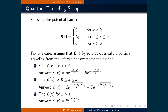The setup for the potential of this system is the opposite of that of the finite potential well. In regions 1 and 3, the potential is zero, and in region 2, the potential is a finite value denoted as U₀. Again, we solve the Schrödinger equation for all three regions.